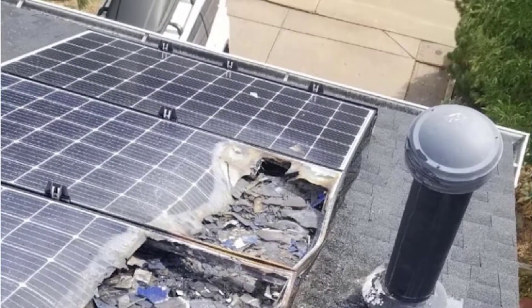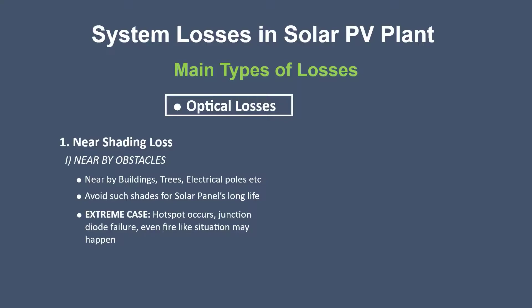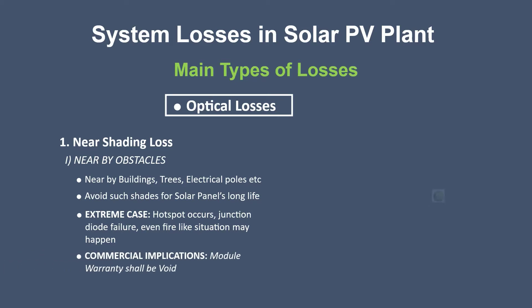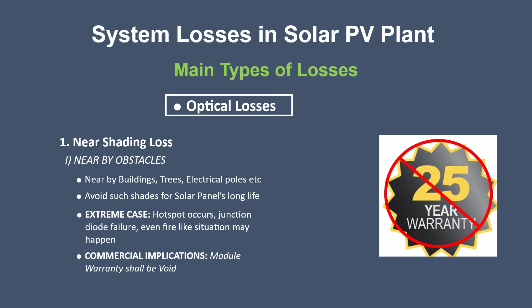You may easily find on the internet reports of fire accidents in solar PV installations, and out of all these cases, more than 80% are because of partial shadings. Commercially, if you install solar panels in a shaded area, even the manufacturers won't provide you the product and performance warranty — which is normally for 25 to 30 years. For such a mistake, you'll end up losing your asset's value.